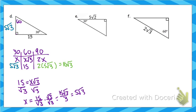When multiplying with radicals, any numbers outside the radical get multiplied together and stay outside; any numbers inside the radical get multiplied together and stay inside.